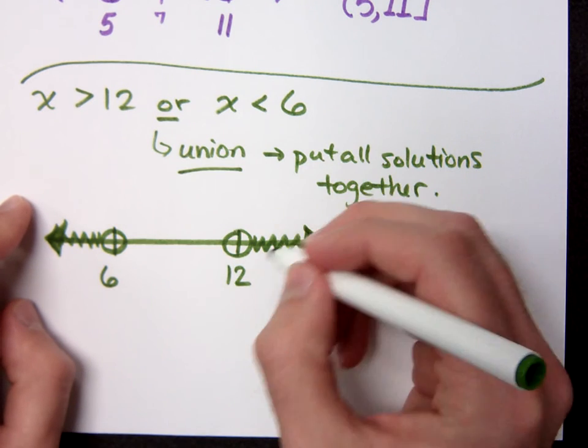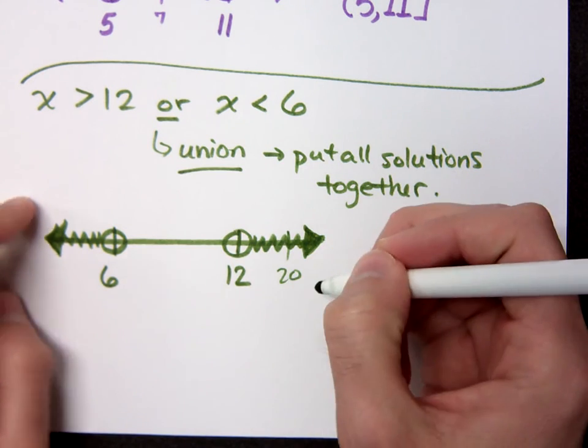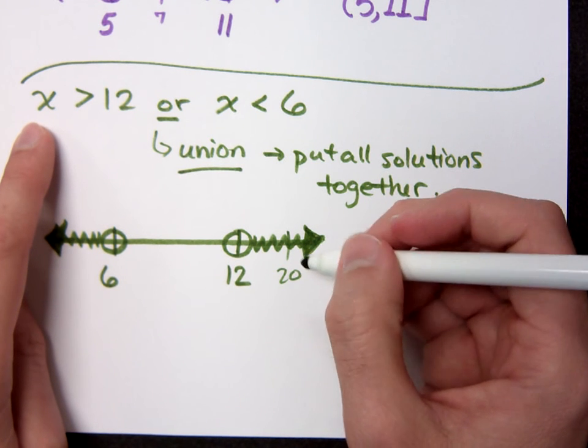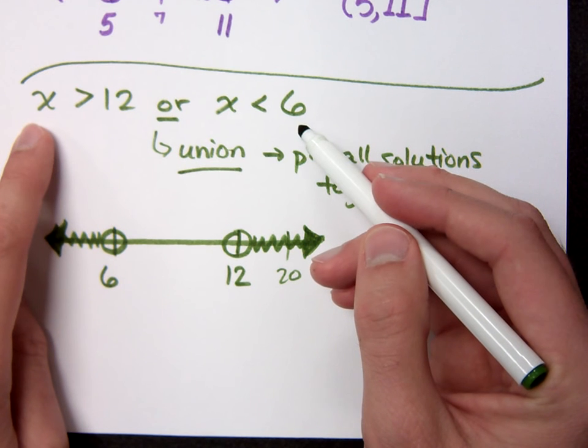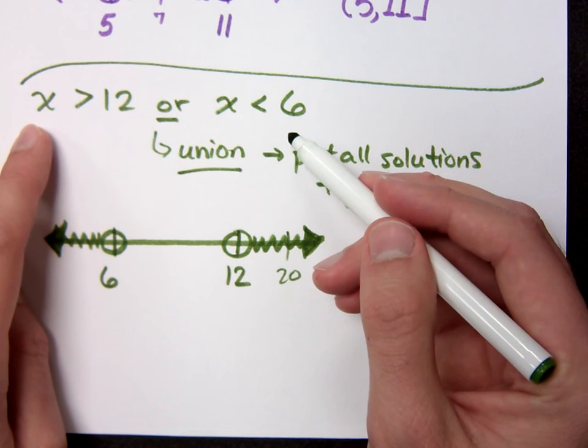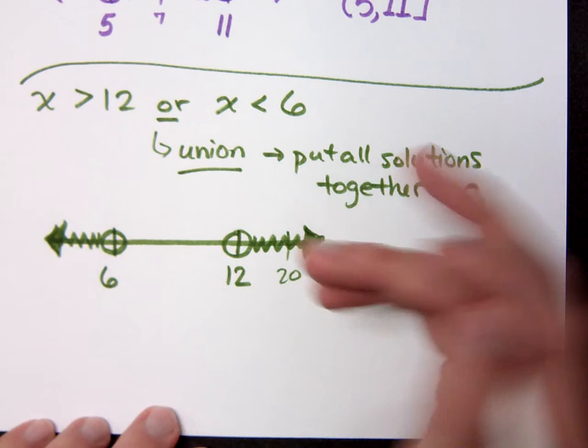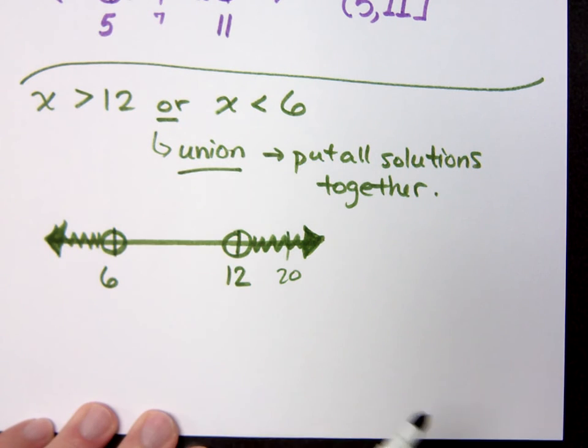So if I picked a number over here, say 20. Is 20 greater than 12? Okay. Is 20 less than 6? No. But do I have to satisfy both of those? Just one or the other. So is 20 greater than 12? Yes. So that's good.